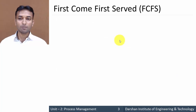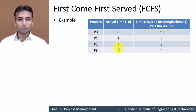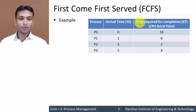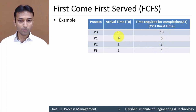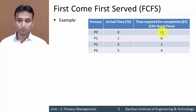Let's take an example of First Come First Serve. Suppose we have four processes P0 to P3 with arrival times 0, 1, 3, and 5 respectively. The CPU burst times required for completion are 10, 6, 2, and 4 respectively. Process P0 arrives at 0 seconds and requires 10 milliseconds to complete its execution.